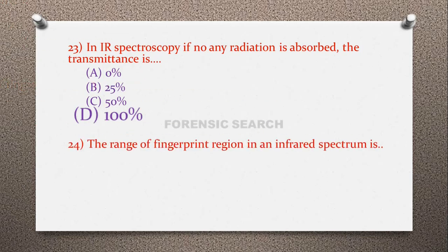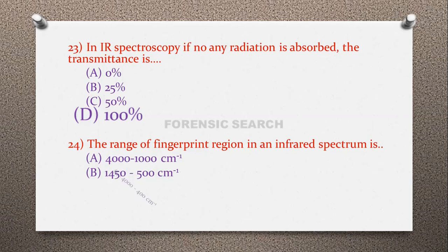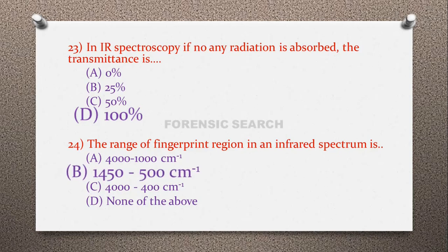Question 24: The range of the fingerprint region in an IR spectrum is — option A: 4000 to 1000 cm⁻¹, option B: 1450 to 500 cm⁻¹, option C: 4000 to 400 cm⁻¹, option D: none of the above. The correct answer is option B — 1450 to 500 cm⁻¹ is the fingerprint region. Option A (4000 to 1000 cm⁻¹) is the functional group region, and option C (4000 to 400 cm⁻¹) is the whole range of the IR spectra.